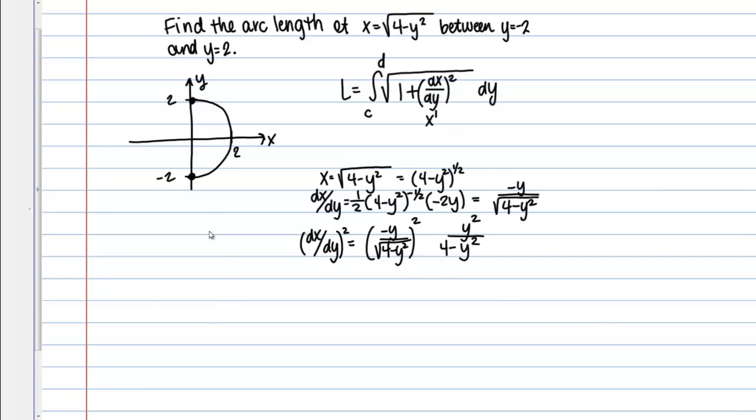So then let's go back to our integral and fill that in. My bounds here I'm told I am finding the arc length between Y equals negative 2 and Y equals 2. So that's one thing to be careful of when you're integrating with respect to Y, make sure that your bounds are Y values, which I have in this case, negative 2 to 2. And then I've got the square root of 1 plus this expression I just found, Y squared over 4 minus Y squared, DY.